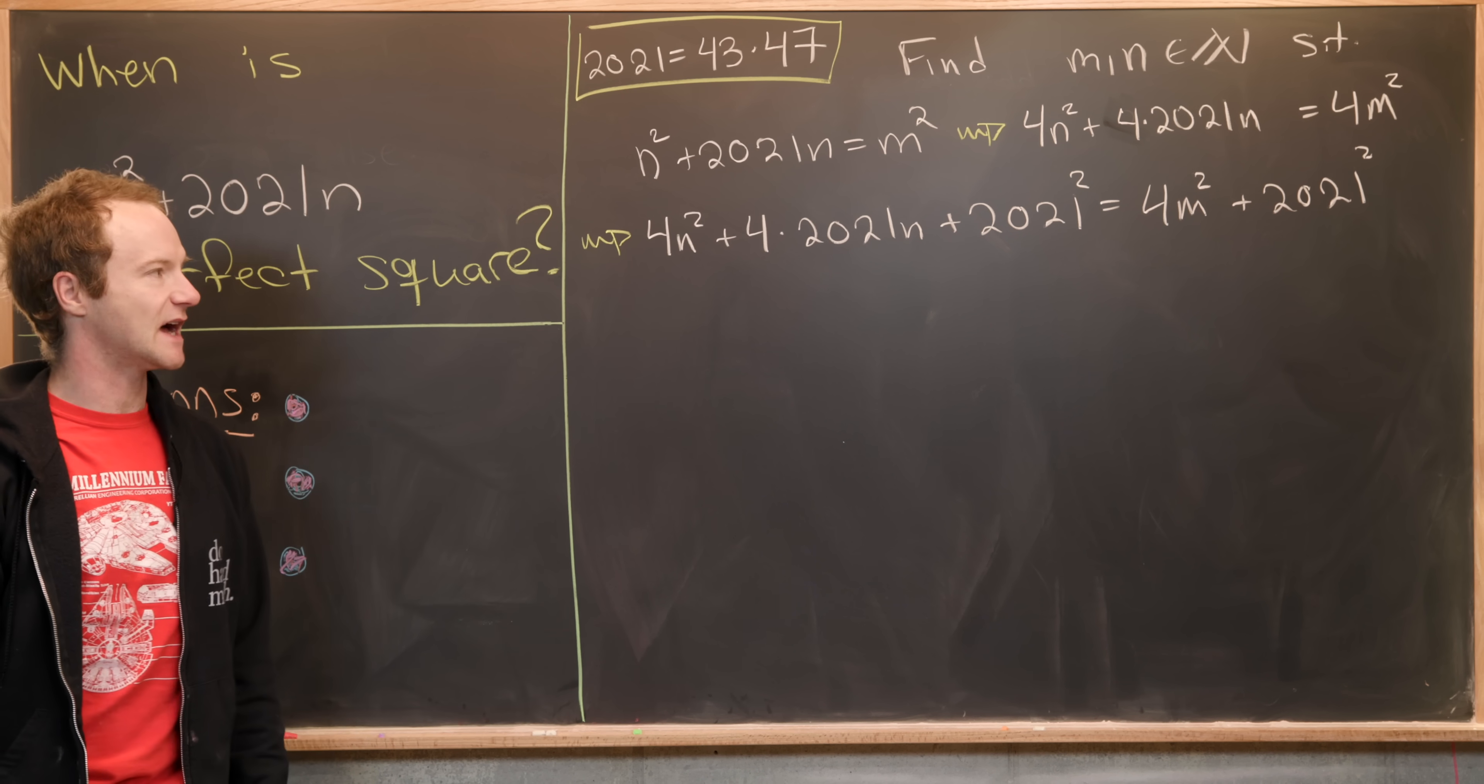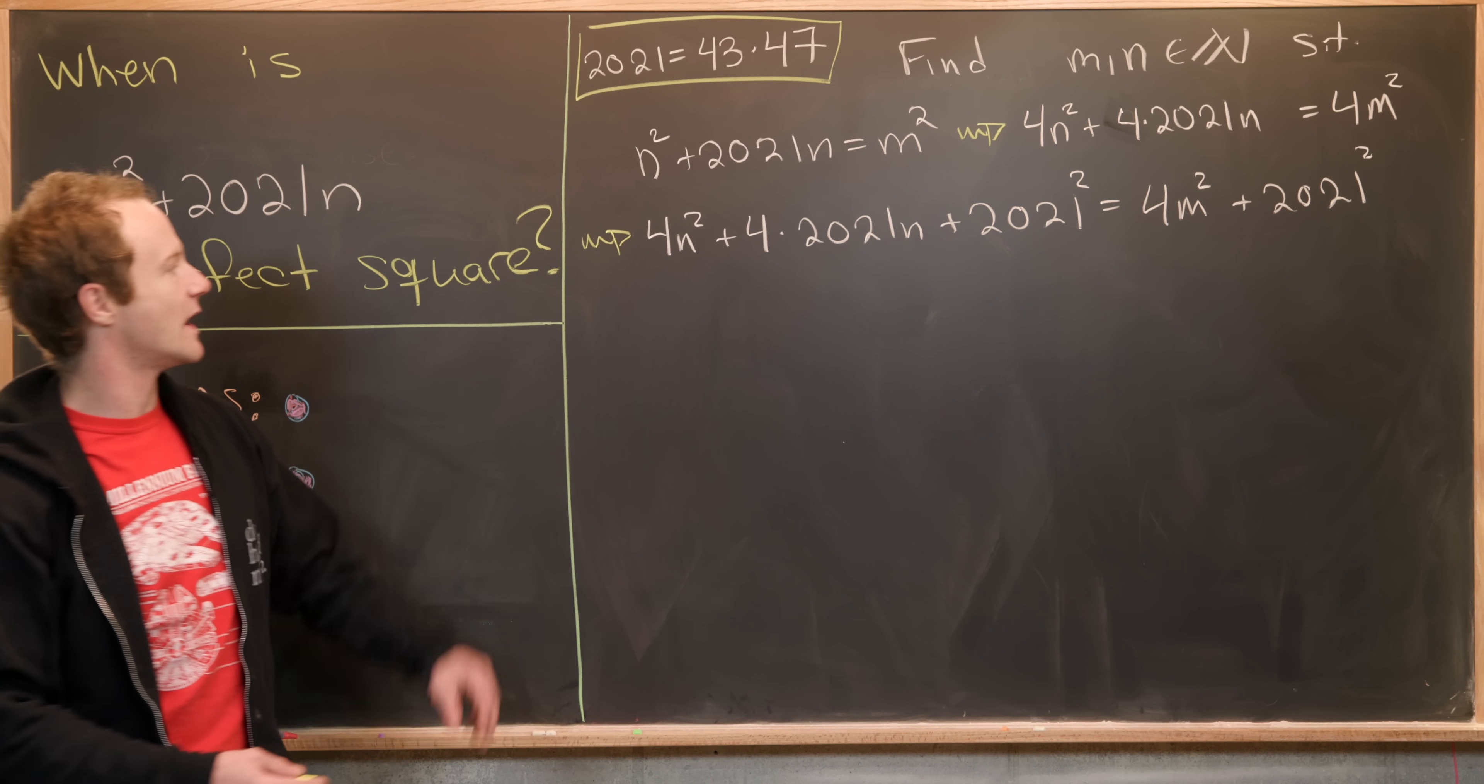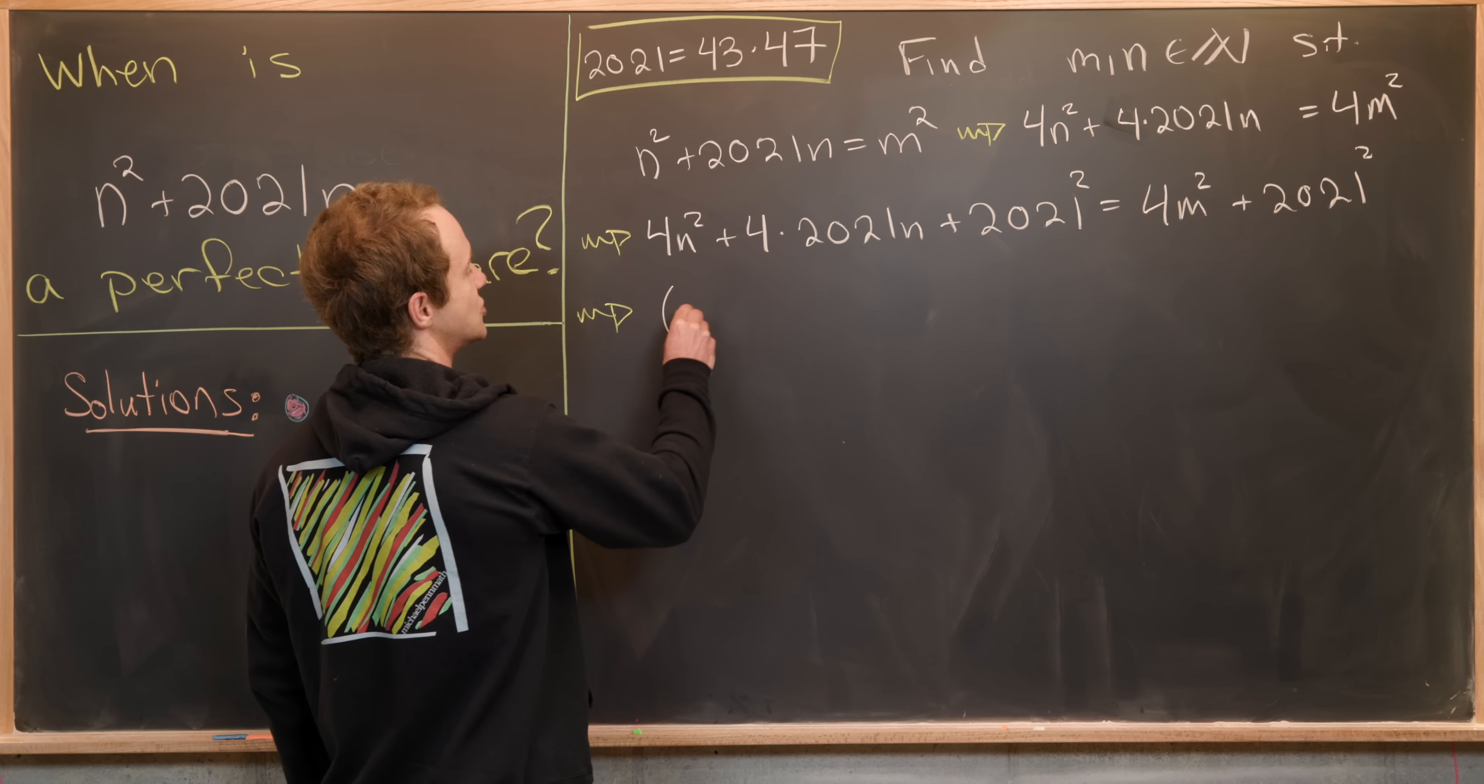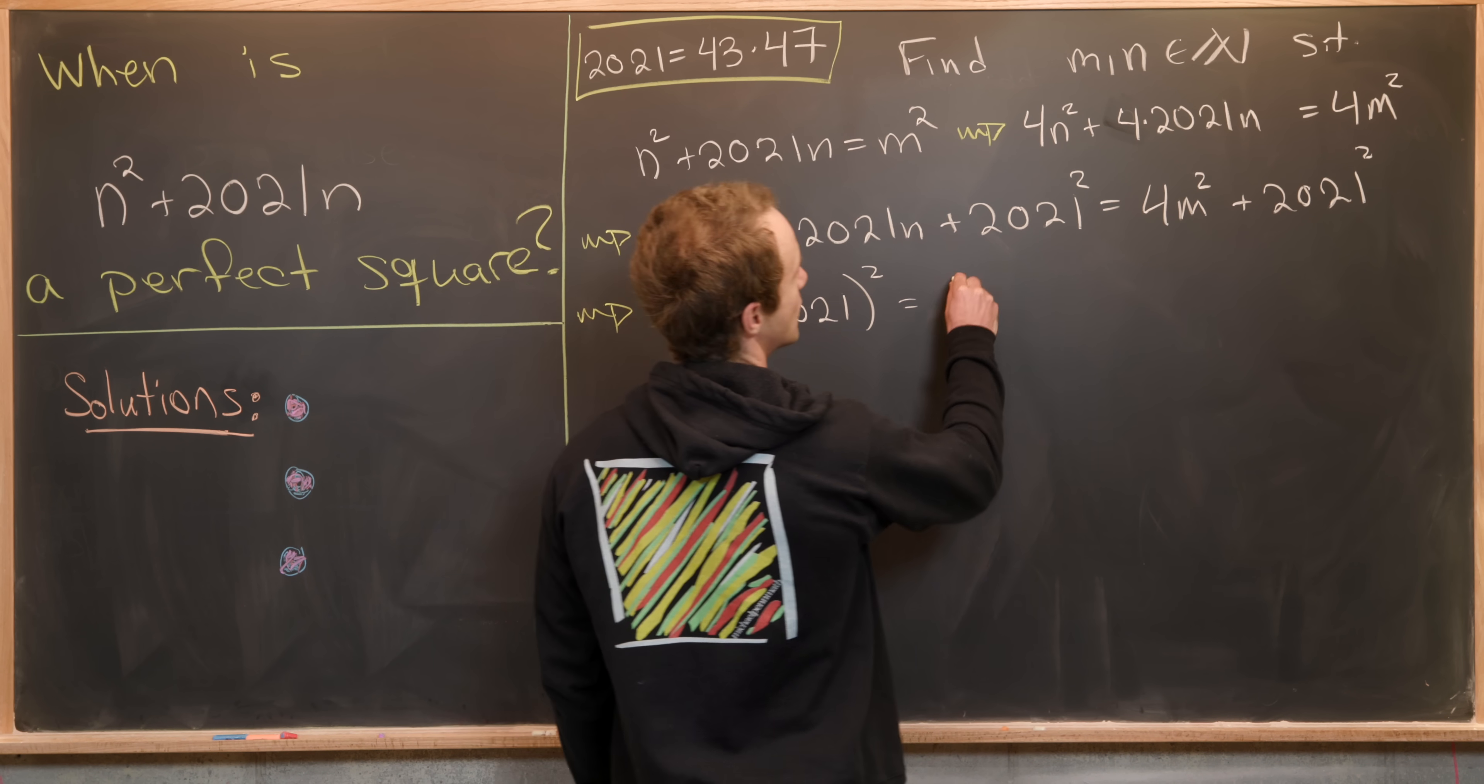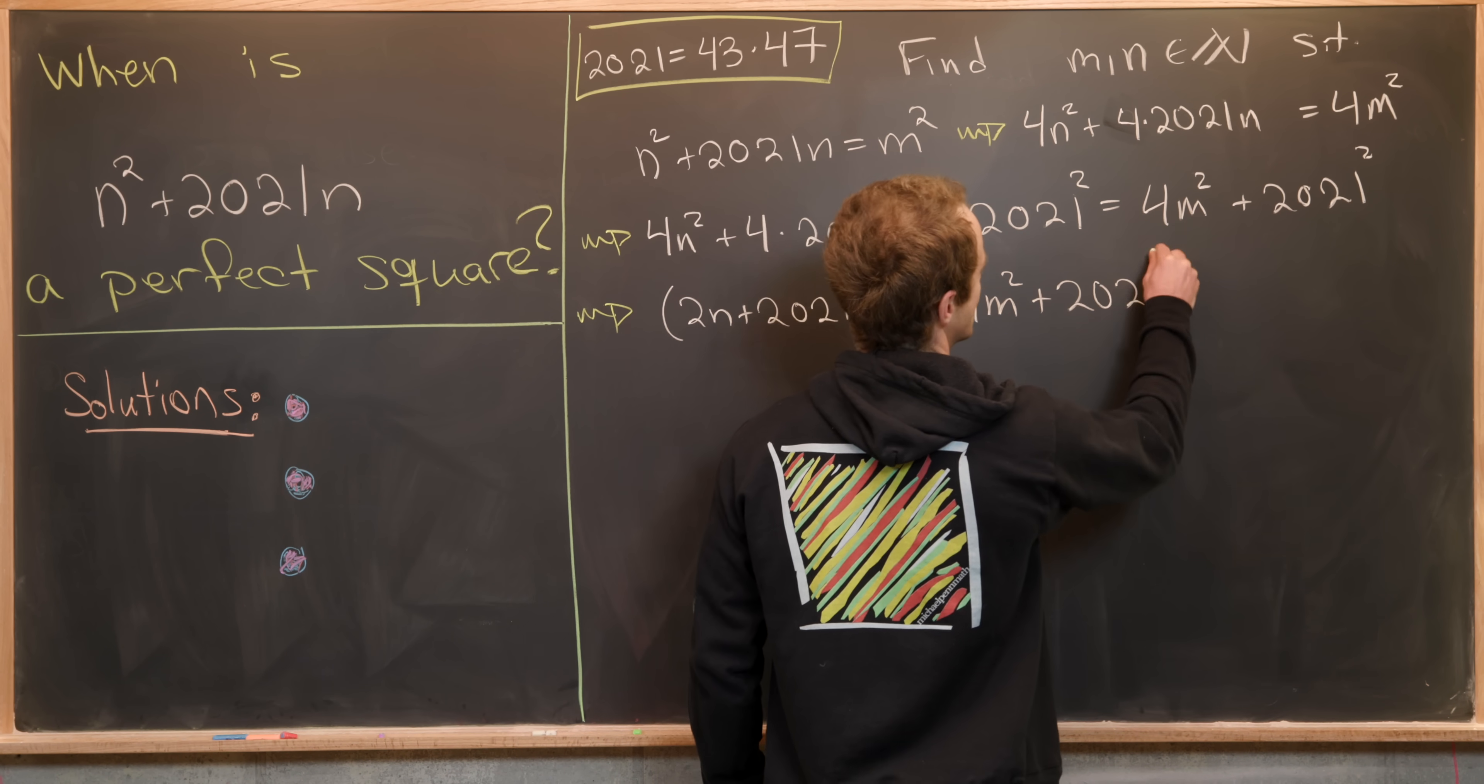But now this left hand side easily factors as a binomial squared. So that's good news. So let's maybe go ahead and do that. That tells us that we have (2n + 2021)² = 4m² + 2021².